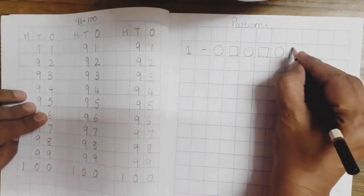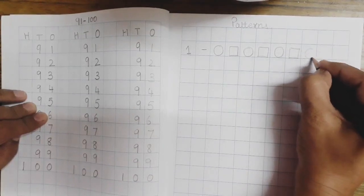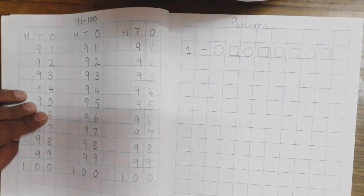Yes and again what will come? Square. Very good. Once again circle and square. Right.